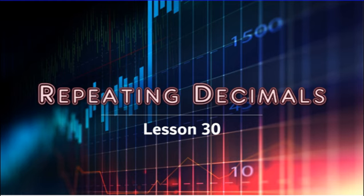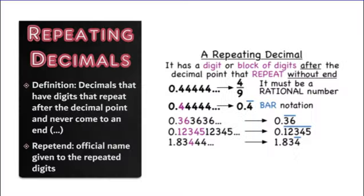Lesson 30: repeating decimals. That's what we're going to be looking at today. First off, what's a repeating decimal? Repeating decimals are just decimals that have digits that repeat after the decimal point and never come to an end.